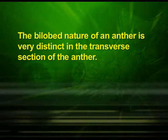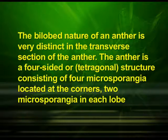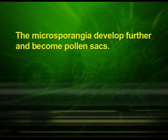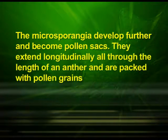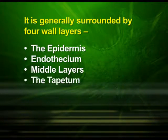The bilobed nature of an anther is very distinct in the transverse section. The anther is a four-sided or tetragonal structure consisting of four microsporangia located at the corners, two microsporangia in each lobe. The microsporangia develop further and become pollen sacs. They extend longitudinally all through the length of an anther and are packed with pollen grains. A typical microsporangium appears nearly circular in outline. It is generally surrounded by four wall layers: the epidermis, endothecium, middle layers and the tapetum.